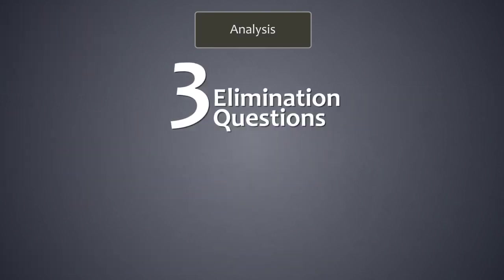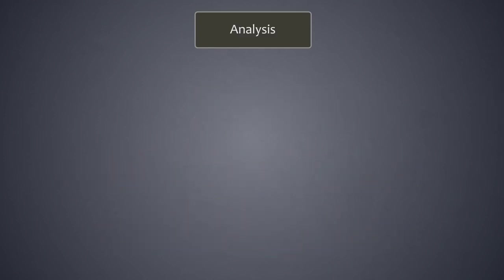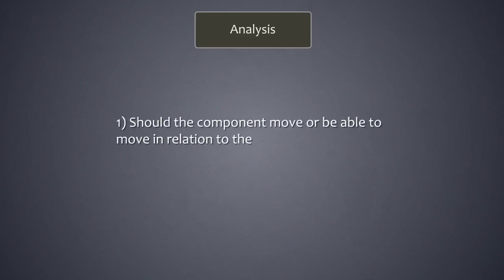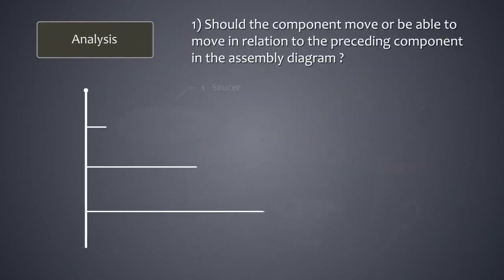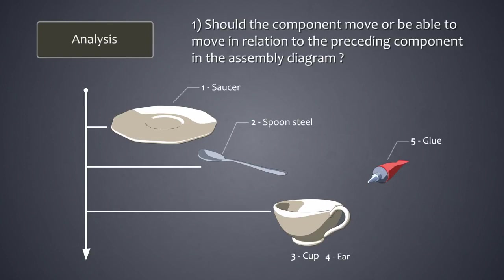Let's now look at the three elimination questions to find suspect components and suspect processes. The first question is: should the component move or be able to move in relation to the preceding component in the assembly diagram? Look at the cup's ear. Does the ear need to move in order for it to function? The answer is no, and in fact, it doesn't move because it is glued to the cup.